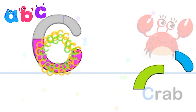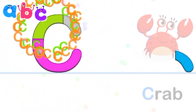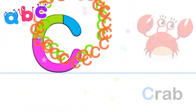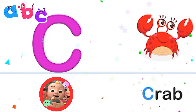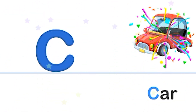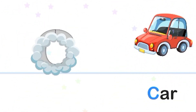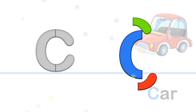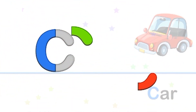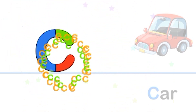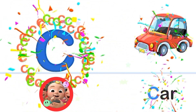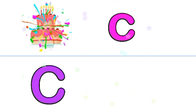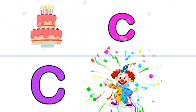Good job. Smart. Well done. C is for car. Smart. Nice. Good one. C is for cake. And for clown.